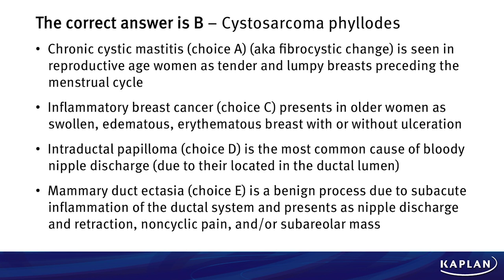Mammary duct ectasia, choice E, is a benign process due to subacute inflammation of the ductal system and presents as nipple discharge and retraction, non-cyclic pain, and/or subareolar masses. Again, this doesn't fit our description in the clinical vignette here.